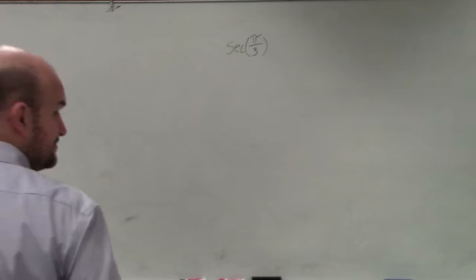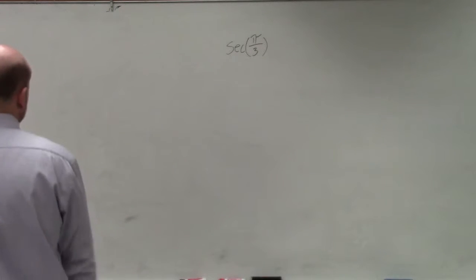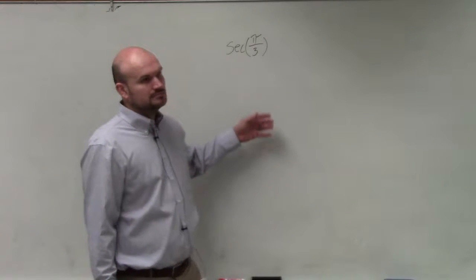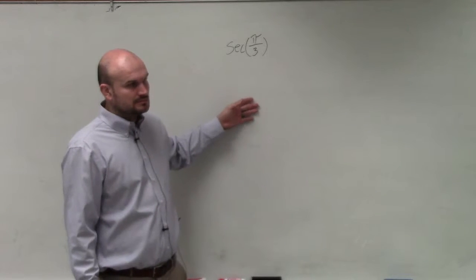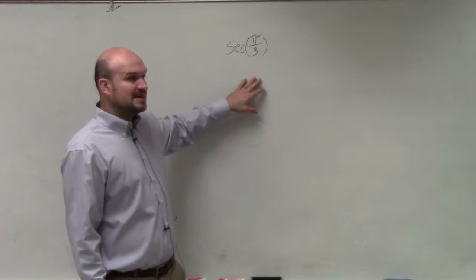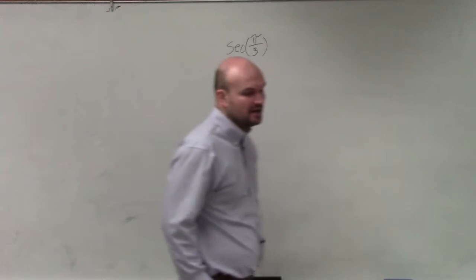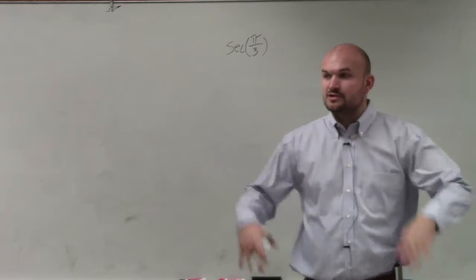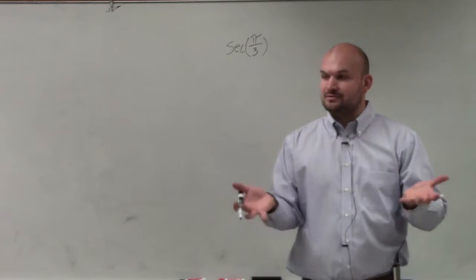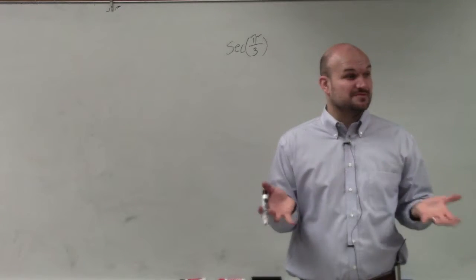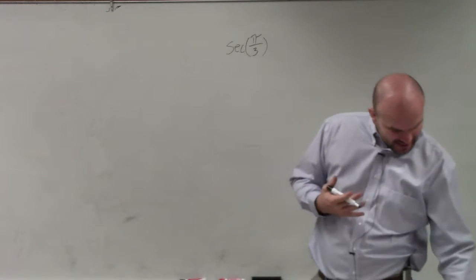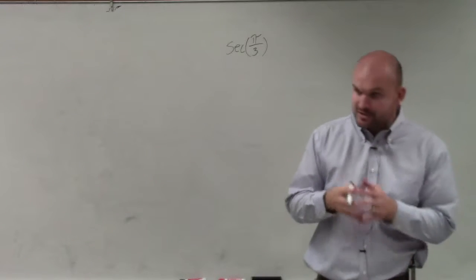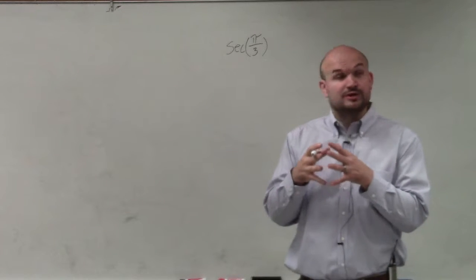So in this example, where they're asking us to find the secant of pi over 3. So they're giving us an angle. The easiest way to solve a problem like this is by using our unit circle.